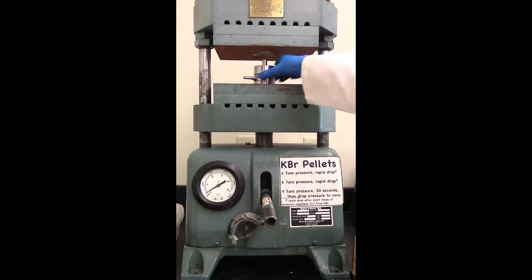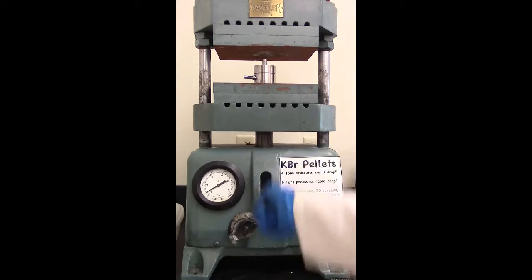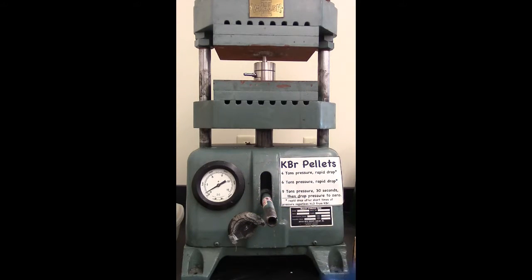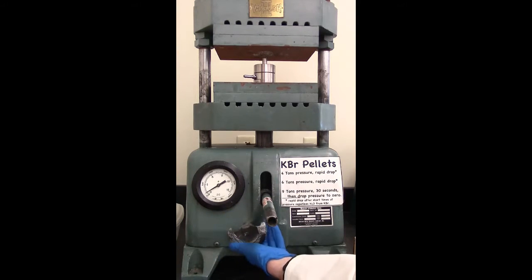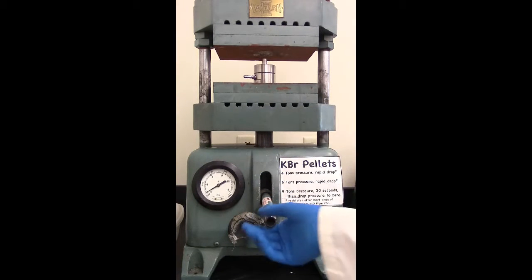So before we start pumping this up, we're going to place our press pellet in there. We do this in order to not only crush the crystals together to form one solid pellet, but we do a couple different steps in order to remove any H2O in the sample. So get it up to four tons of pressure, rapid drop. Then to six tons pressure and another rapid drop. And nine tons pressure, hold it for 30 seconds and then drop the pressure to zero.